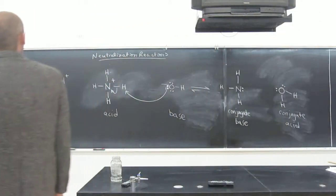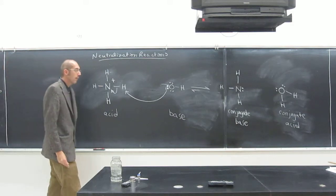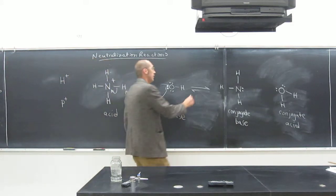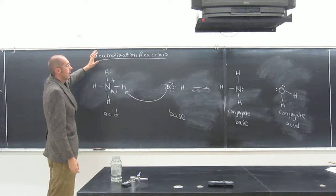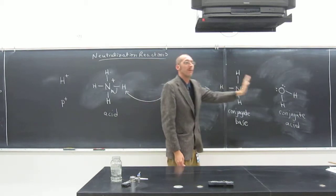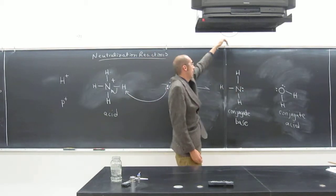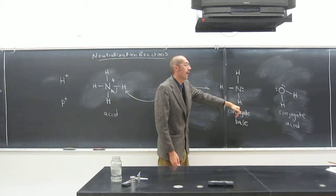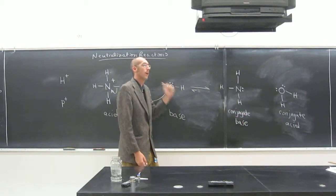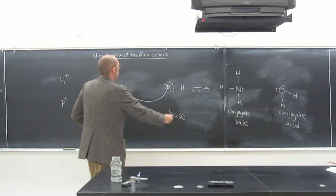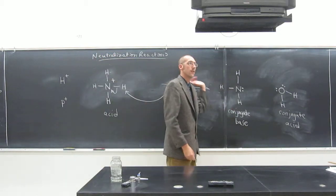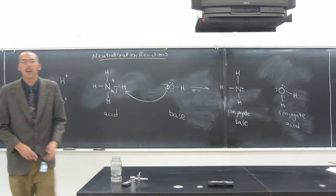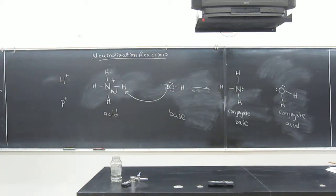I know we didn't do any problems with Le Chatelier's principle, or didn't do many problems, but what'll happen is we can push this equilibrium back and forth depending on what we put in. If we put in a lot of this, it'll go this way. But if it's just like this, these are less unstable than these, so it's going to want to push the reaction naturally. Are there any questions on this? You guys get this?